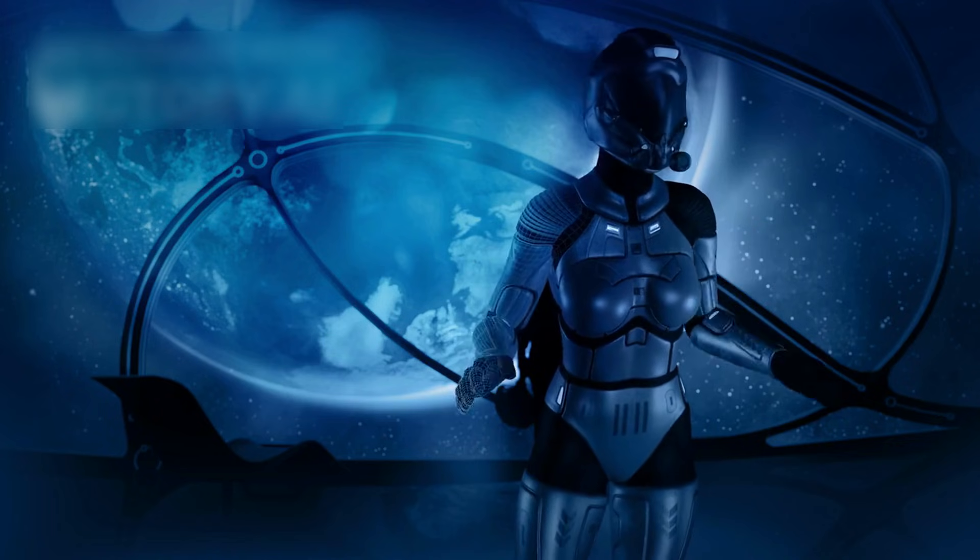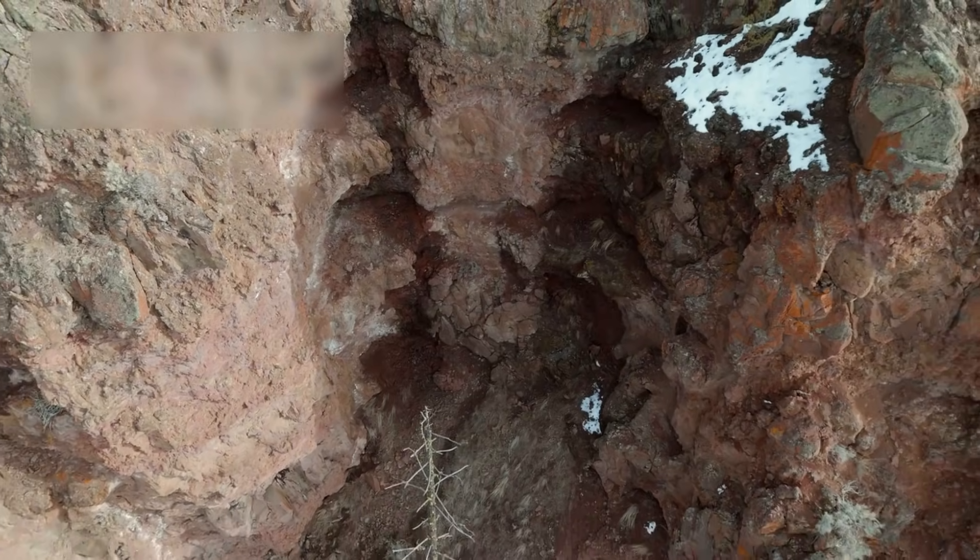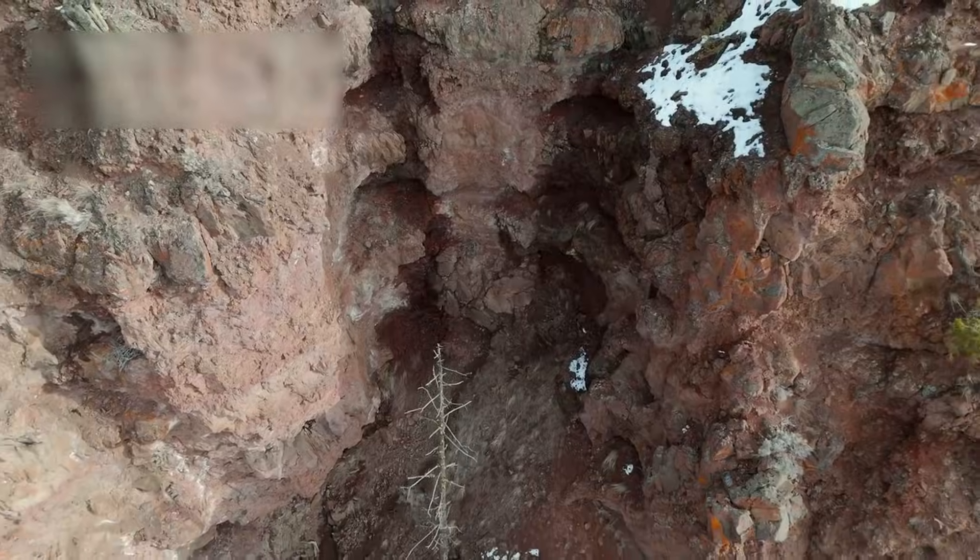On Ceres, however, the evidence is compelling. The Occator crater became the focal point of intense study. Within its boundaries, the most prominent bright region, dubbed Spot 5, contains a central dome surrounded by cracks and salt deposits, suggestive of a cryovolcanic vent.